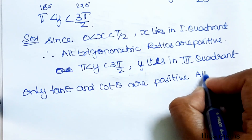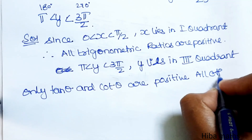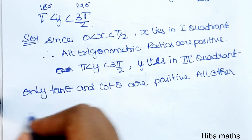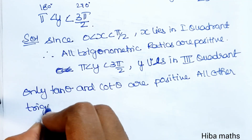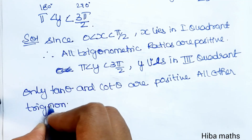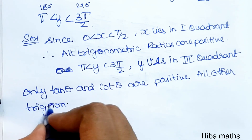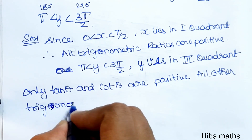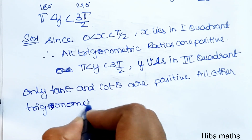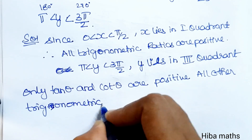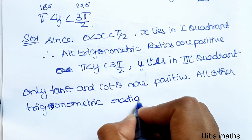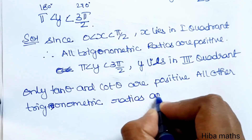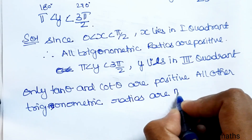All other trigonometric ratios are negative in the third quadrant.